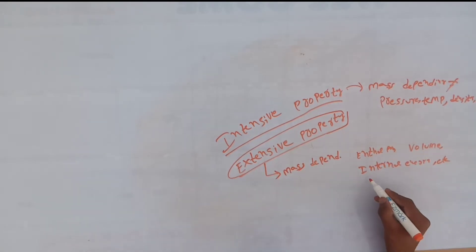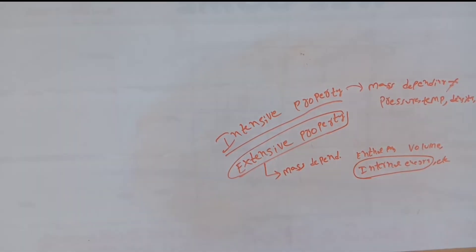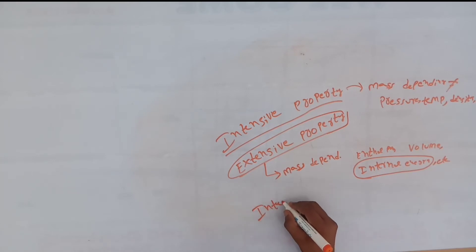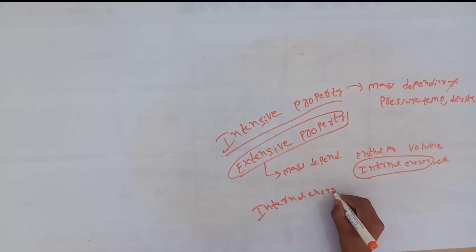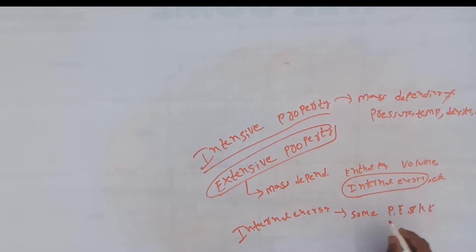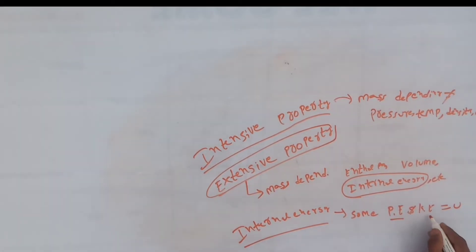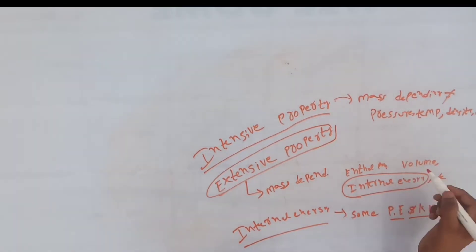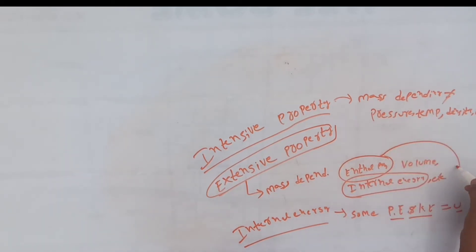Extensive property — examples include internal energy, kinetic energy, potential energy, and enthalpy.